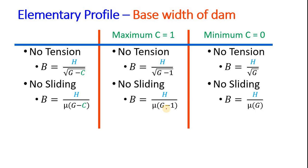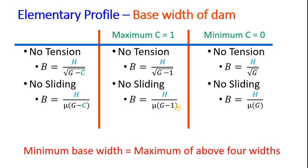When C equals 0, the minimum, for no tension B equals H divided by square root of G, and for no sliding B equals H divided by mu times G. Suppose we got values 2, 2.5, and 5 from these equations. The minimum base width would be the maximum of above four widths. So the minimum base width of the dam is the maximum of these values.